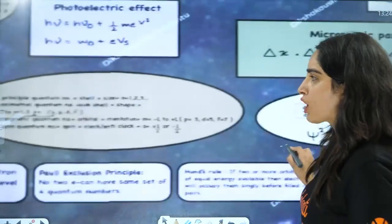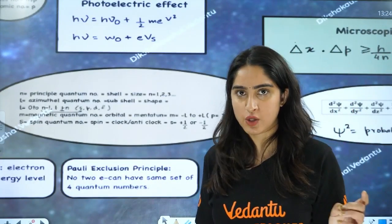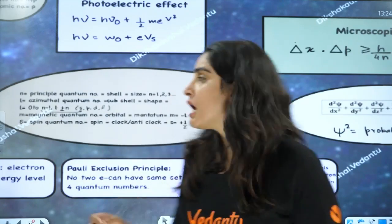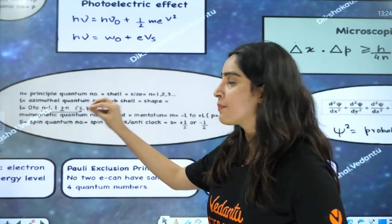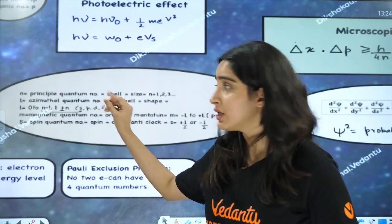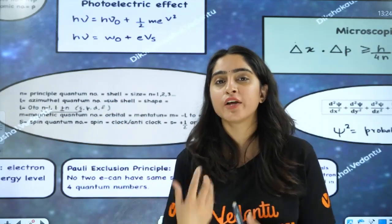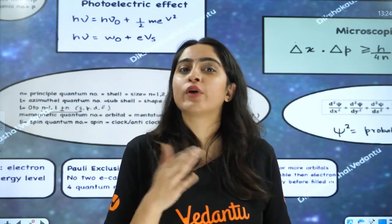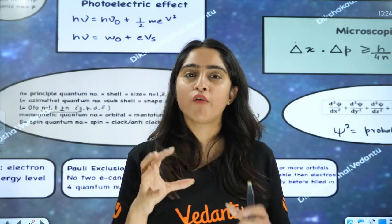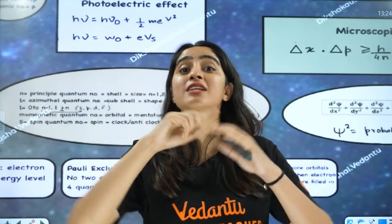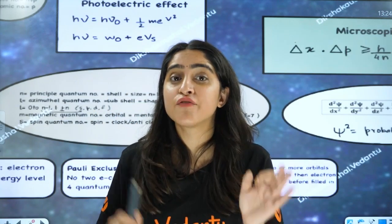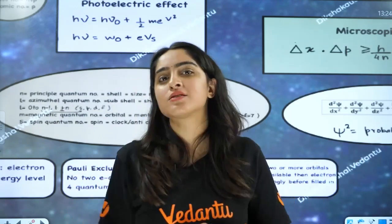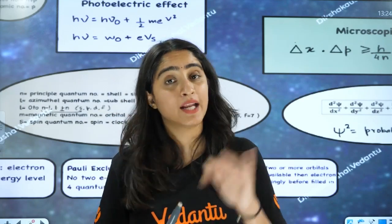The quantum numbers are N, L, M, and S. Spin quantum number S was not a solution of the Schrödinger wave equation, although N, L, and M are. N is the principal quantum number — it defines the size or shell number. L is the azimuthal quantum number — it defines the shape of the subshell. M is the magnetic quantum number — it defines the orientation. S is the spin quantum number — it tells whether the electron spins clockwise or anticlockwise.